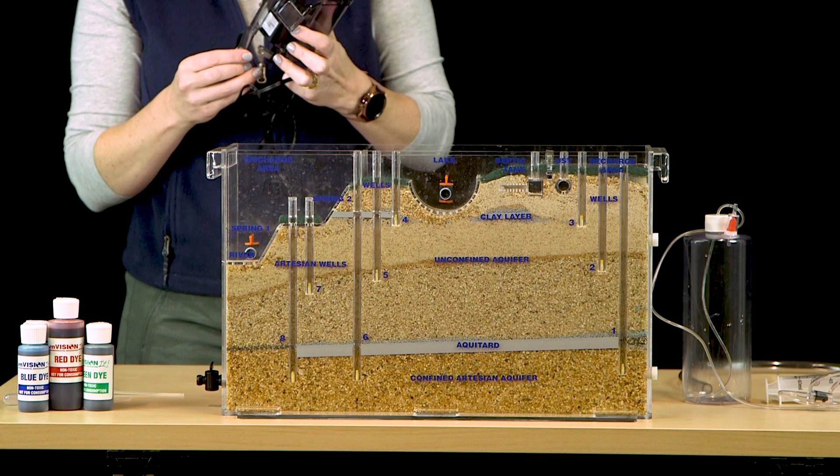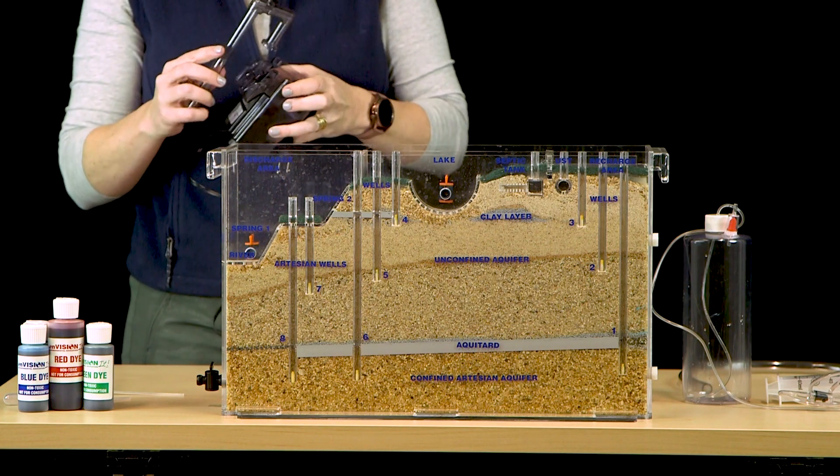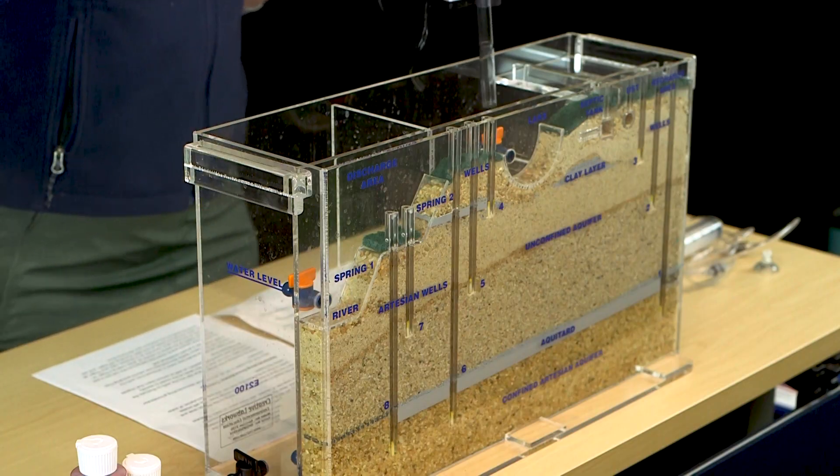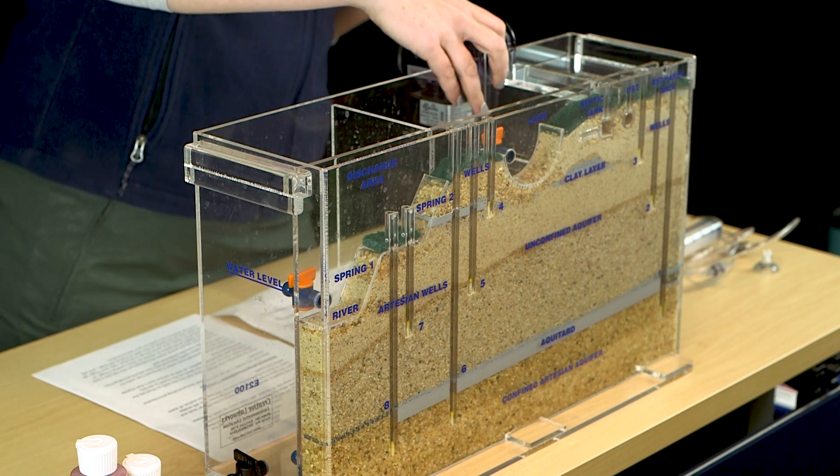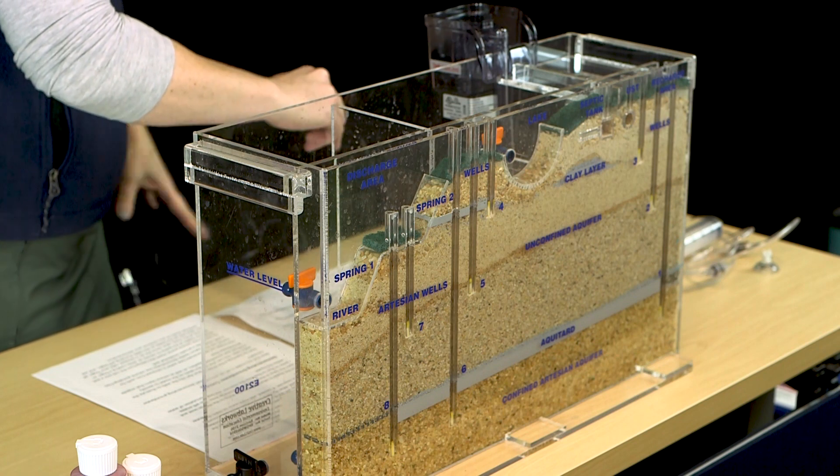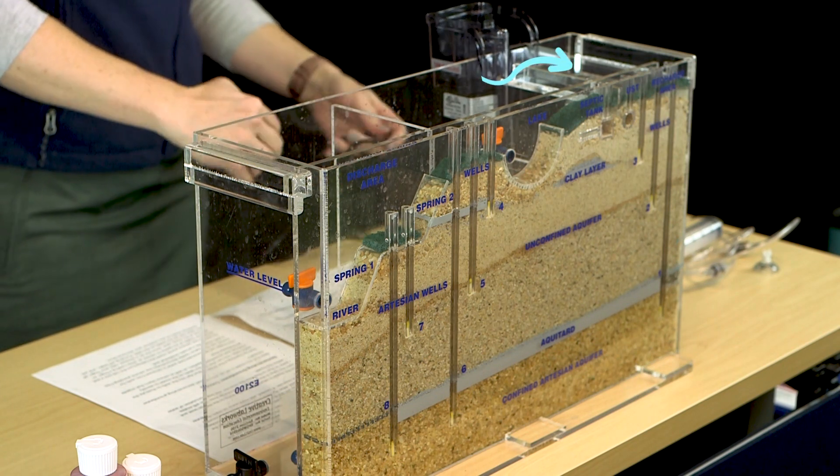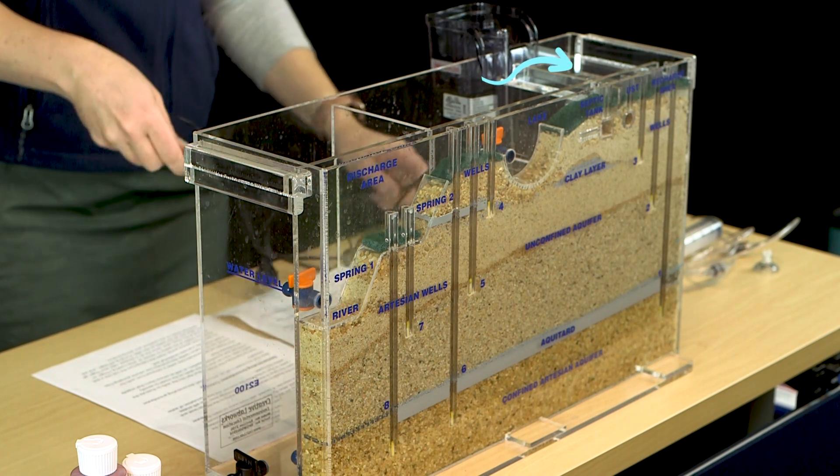The model comes with an aquarium pump. Take the pump out of the box and assemble the tube. You do not need to install the filter. Place the pump in the back left side of the model where it will deposit water onto the plastic platform in the recharge area.